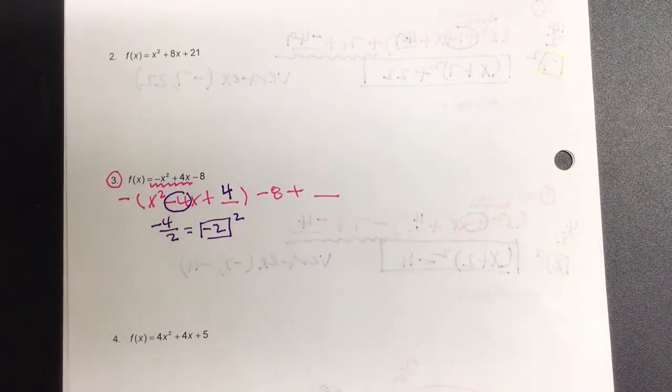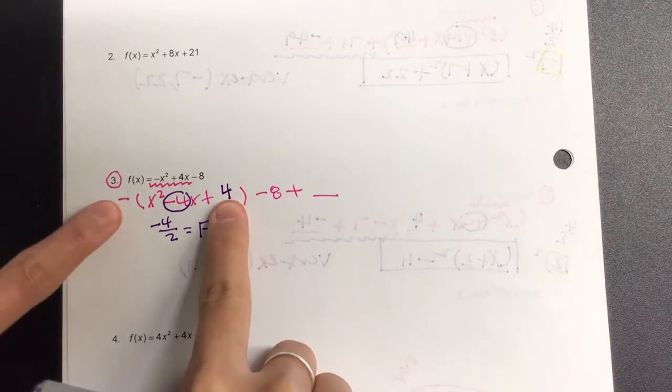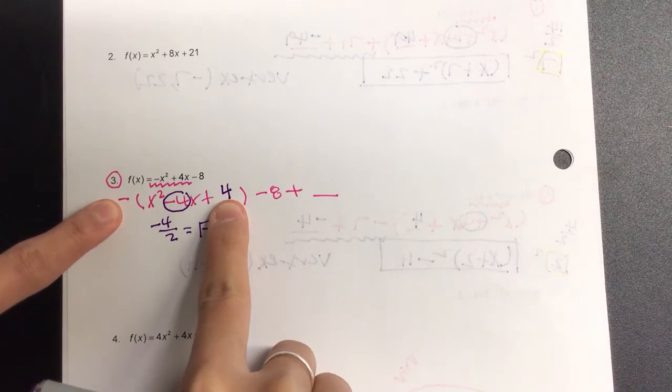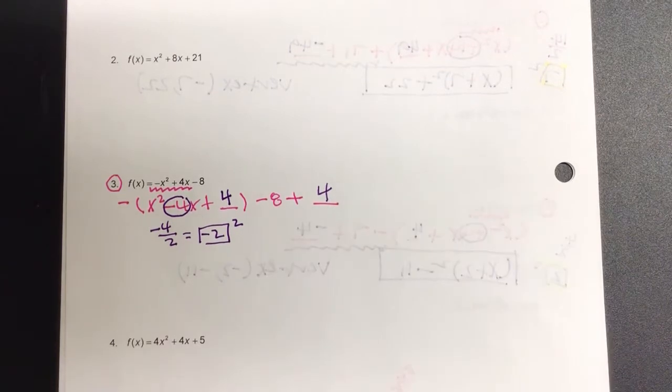Now, if you're thinking to write minus 4 at the very end, be really careful. What is actually represented by this 4 when I distribute the negative? It is negative 4. What is the opposite of that negative? Positive 4. So always take the outside and multiply it back, and then take that opposite.